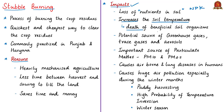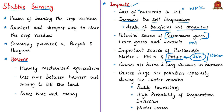Frequent stubble burning leads to loss of microbial population. It is also a potential source of greenhouse gases, trace gases and aerosols. More importantly, it is an important source of Particulate Matter 10 and Particulate Matter 2.5. Reports say stubble burning or biomass burning constitutes 26% of the concentration of PM2.5 in winter season in Delhi, causing severe airborne and lung diseases in human beings.